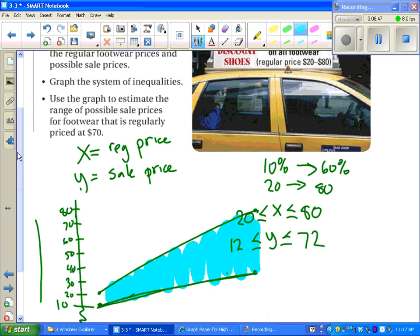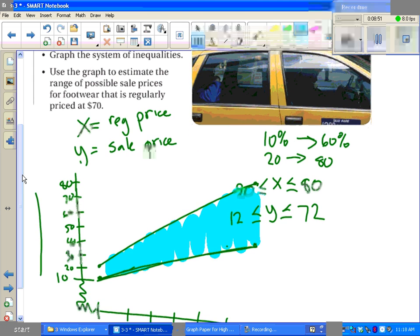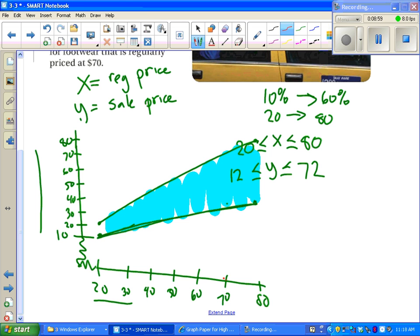Going back to what the problem was originally asking, it said graph the system of inequalities. We've done that. Now it's saying use the graph to estimate the range of possible prices for footwear that is regularly $70. So we go on our graph and say a $70 shoe could now be $30-something. In fact, I think it comes out to exactly 70 times 60%, which would be actually $42. My graph is just maybe not drawn quite to scale. And the most expensive $70 shoes would be the ones that are only 10% off. 70 times and then take off 70% would be $63. So based on this sale, $70 shoes could be anywhere from $42 to $63.